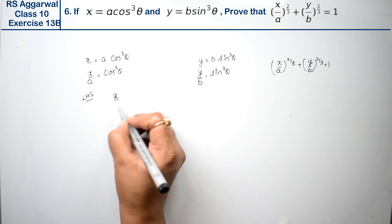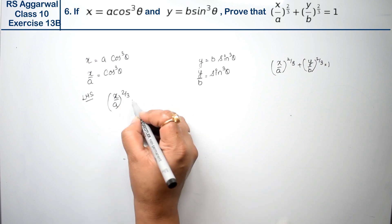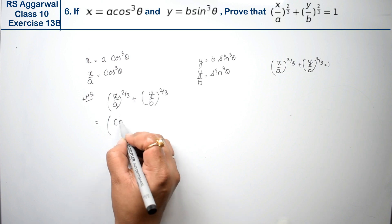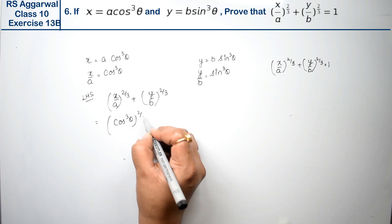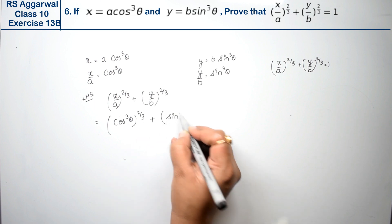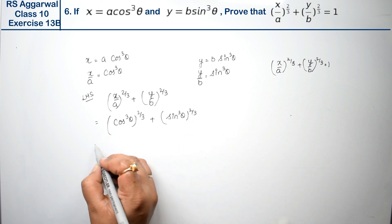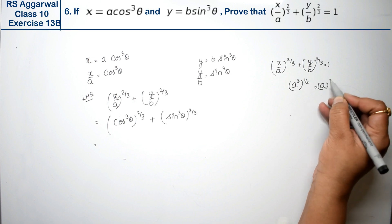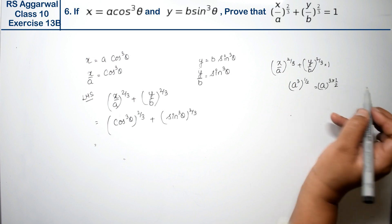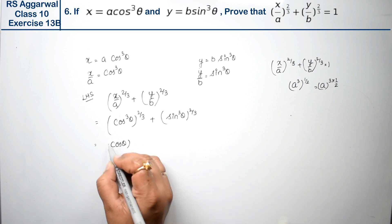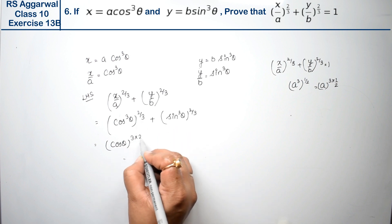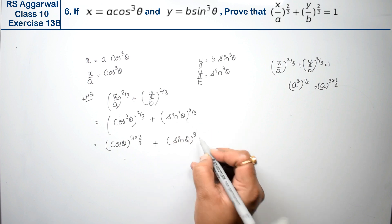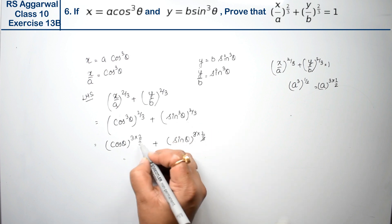Left-hand side is (x/a)^(2/3) + (y/b)^(2/3). Substituting, we get (cos³θ)^(2/3) + (sin³θ)^(2/3). When we have a cube and an outer power, we write the exponents as 3 × (2/3) for cos θ and 3 × (2/3) for sin θ. The 3 cancels with the 3 in the denominator, giving us cos²θ + sin²θ.